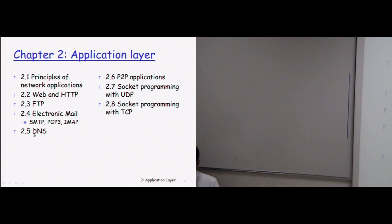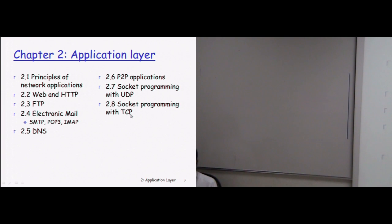DNS is another protocol on the application layer used for the Domain Name System — translating website URLs into IP addresses. We also cover peer-to-peer applications, socket programming using UDP (User Datagram Protocol) or TCP (Transmission Control Protocol) on the transport layer. Common application layer protocols include HTTP, FTP, SMTP, POP3, IMAP, DNS, and Telnet.